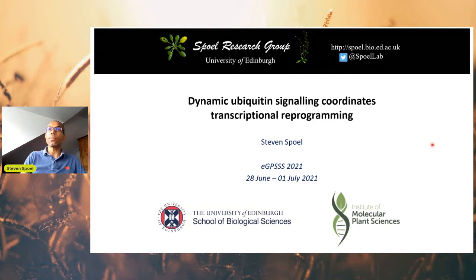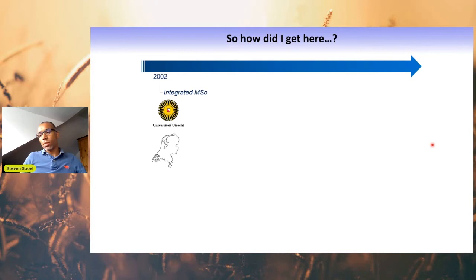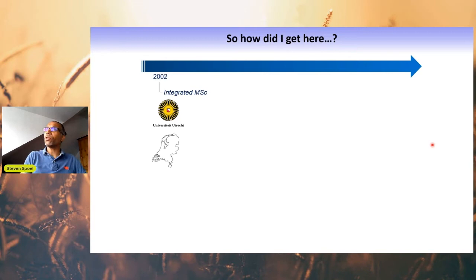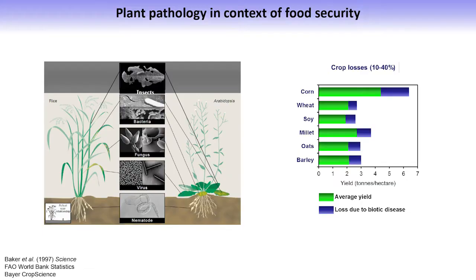How did I get here? I started my university degree in 1997 in the Netherlands, where I'm originally from. At the time we had only integrated master's degrees — a combination of the bachelor's and the master's degree. I chose to study biology, particularly because I was very interested in evolutionary biology, but in my first year I discovered my love for molecular plant sciences instead. Towards the end of my study I did a few internships where I really got to study the plant immune system.